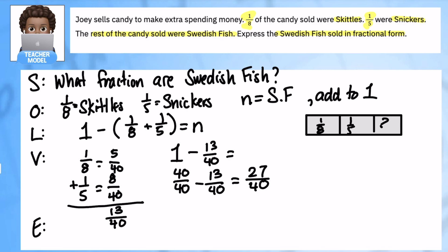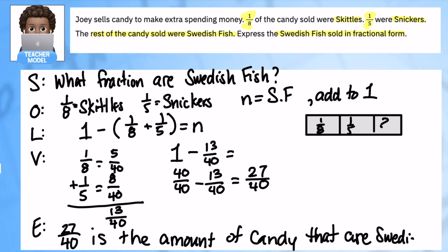So I'm going to put that into context. 27 over 40 is, how can I say it in a full sentence? Joey sells candy, 27 over 40 is the amount of candy that are Swedish Fish. And sometimes I just have to read my own question. What fraction are Swedish Fish? 27 over 40 is the fraction, so instead of amount I'm going to put the fraction, the fraction of candy that are Swedish Fish. Hit pause and let's jot this one down in your notes as well.